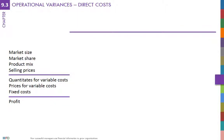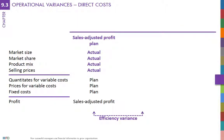Let's start with the efficiency variance. The sales-adjusted profit plan is based on actual revenues and planned costs given actual revenues. In other words, costs in the sales-adjusted profit plan are estimated using the planned efficiency in manufacturing and the planned prices of inputs.